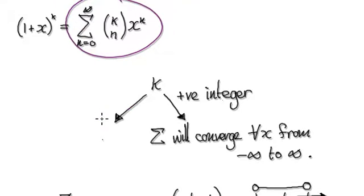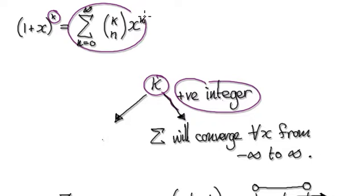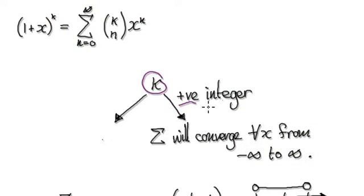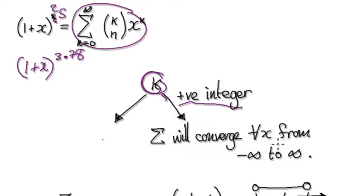If k is a positive integer — for example, squared or to the power of 5, but not 3.78 — then this series will converge for all x from negative infinity to infinity.